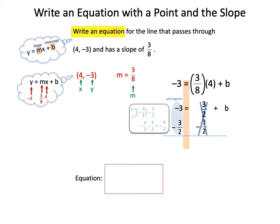Either way, when you add negative 3 and negative 3 halves, you should get negative 9 over 2, or negative 9 halves. That is the value of b, because you've eliminated everything else. You've isolated b.